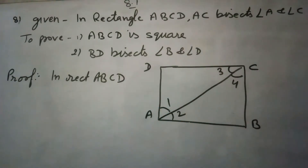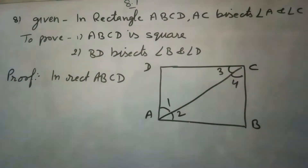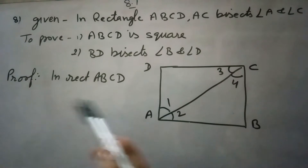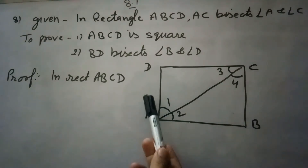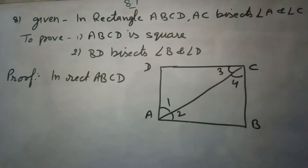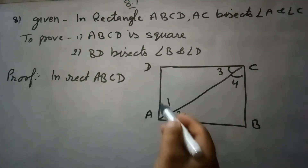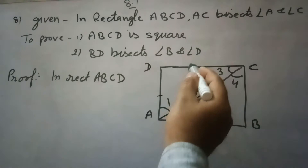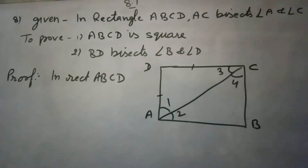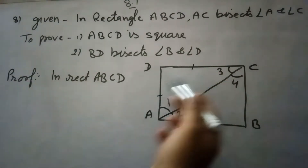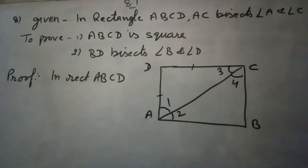So for this, because this is a rectangle and to prove a rectangle as a square, we need to prove that any pair of adjacent sides is equal. We will take AD and DC, and we need to prove that AD equals DC.